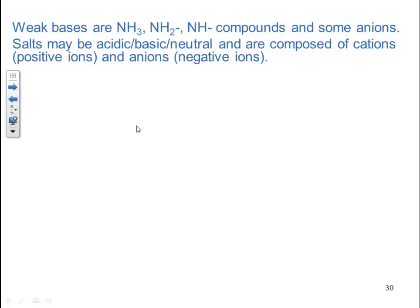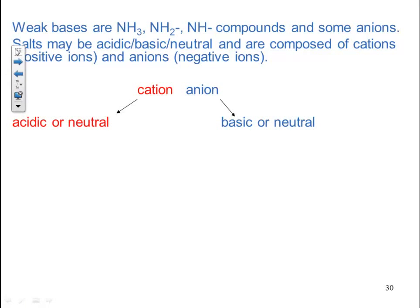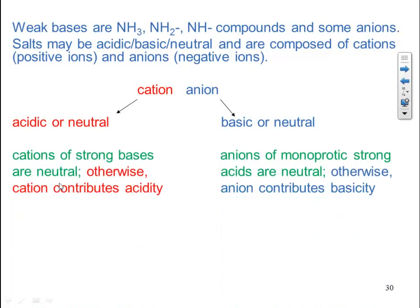Salts may be acidic, basic, or neutral and are composed of cations (positive ions) and anions (negative ions). To determine the nature of a salt, we look at the cation and anion individually. A cation can be either acidic or neutral; an anion is either basic or neutral. The cations of your strong bases are neutral — otherwise a cation contributes acidity. The anions of your monoprotic strong acids are neutral — otherwise the anion contributes basicity.